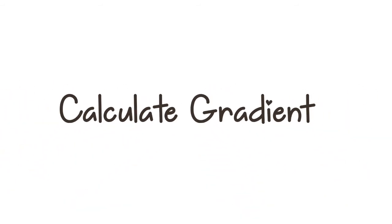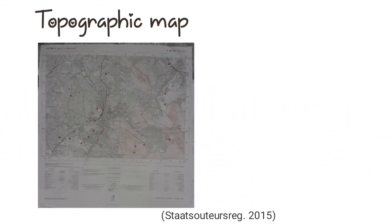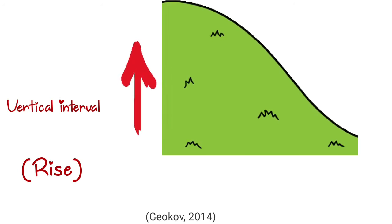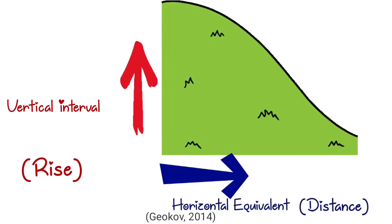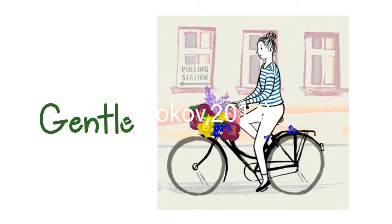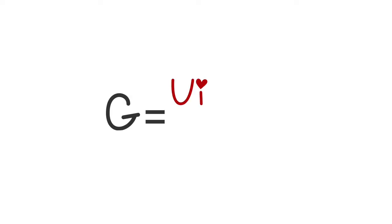In today's video you are going to learn how to calculate gradient on a topographic map as well as on an orthophoto map. Gradient is the relationship between vertical interval and horizontal equivalence. Gradient is used to determine whether the slope is steep or gentle. The formula for calculating gradient is vertical interval over horizontal equivalence.